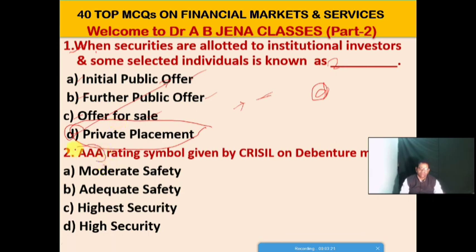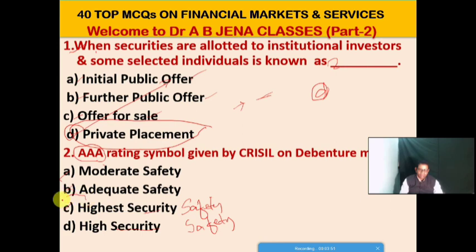Second MCQ: the AAA rating symbol given by CRISIL on a debenture means what? A: moderate safety, B: adequate safety, C: highest safety, D: high safety. C is the right option. The AAA rating symbol given by CRISIL on a debenture means highest safety. Note: there was a typing error in the options — the correct answer is highest safety.